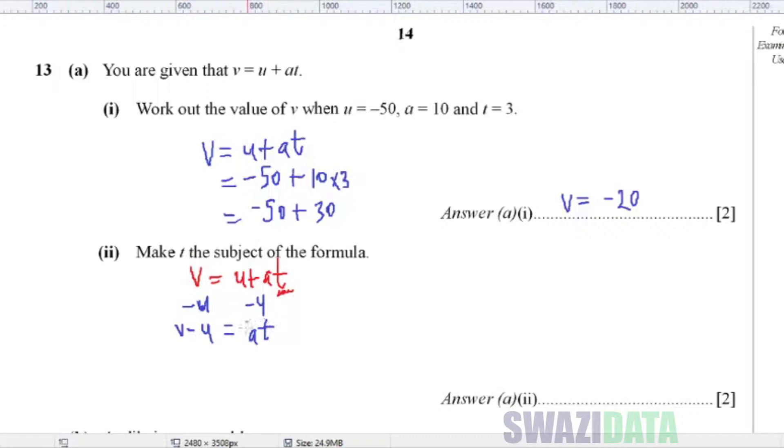And then to make T the subject, we can divide by A both sides. So dividing by A, the A's cancel out, and then you'll have T equal to V minus U over A. So our answer for part A is T is equal to V minus U over A.